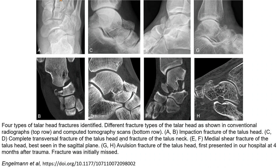Four types of talar head fracture are identified in this study. Different fracture types of talar head are shown on conventional radiograph on the top row, and CT scan on the bottom row. Images A and B show an impaction fracture of the talar head. Images C and D show a complete transverse fracture of the talar head and fracture of the talar neck. Images E and F show a major shear fracture of the talar head.